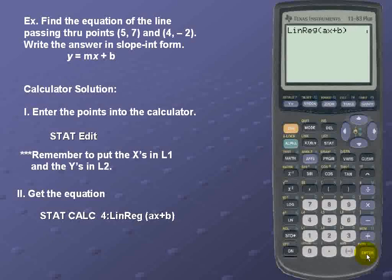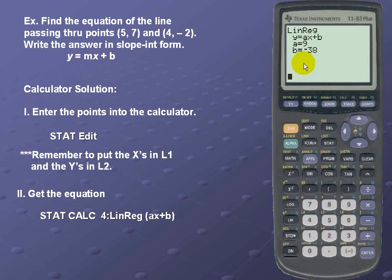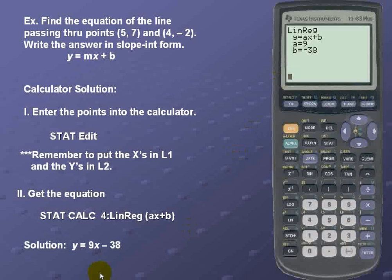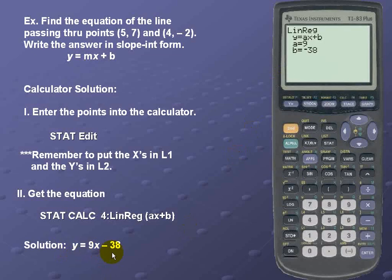We'll hit Enter once and then we'll hit Enter again. Notice that the calculator gives you the general model form for a linear equation, y = ax + b. We'll simply put in the a, or the slope of 9x, and our y-intercept value b of -38. So our final equation is y = 9x - 38.